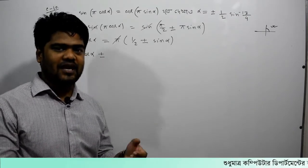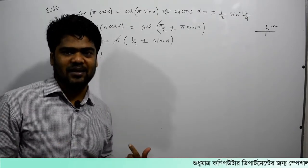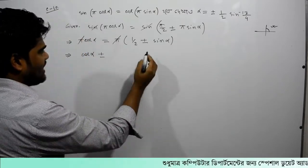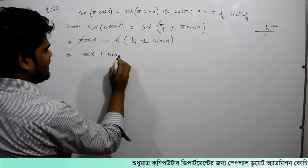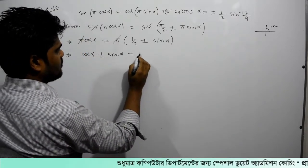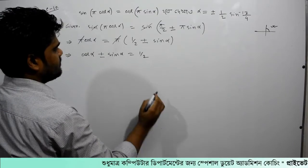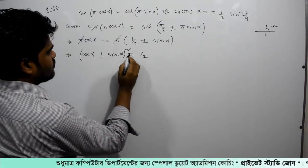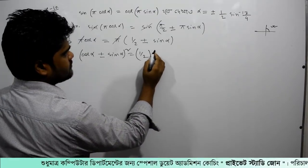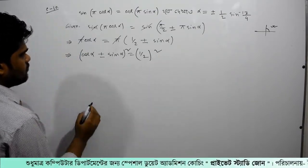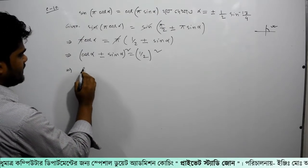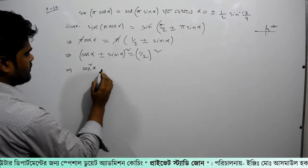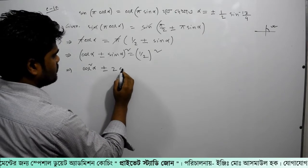And this plus minus sin alpha — we have to say plus minus. Because we have to say minus, minus we have to say plus. So here we have to say plus minus sin alpha. Now we have to say plus minus 2.